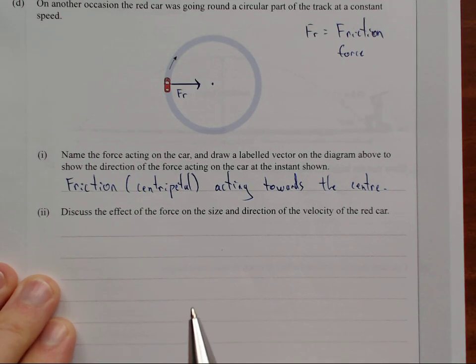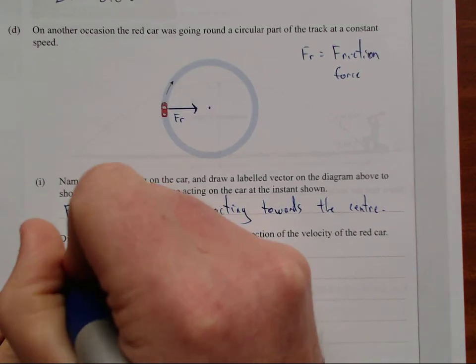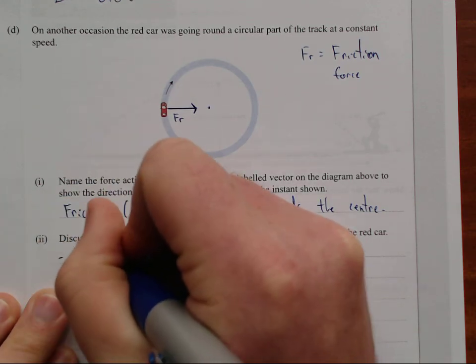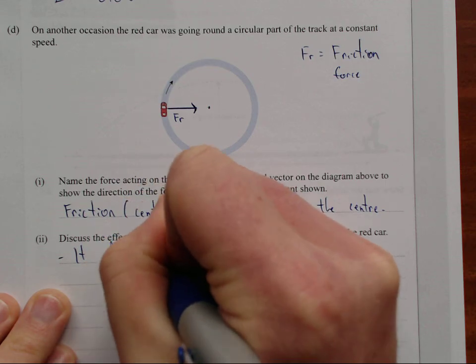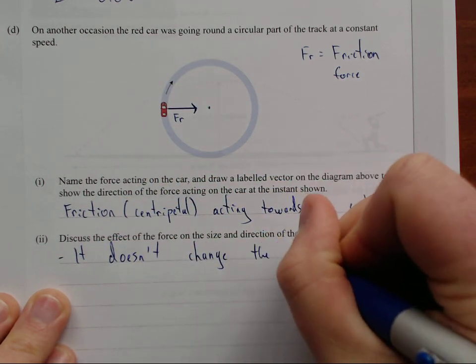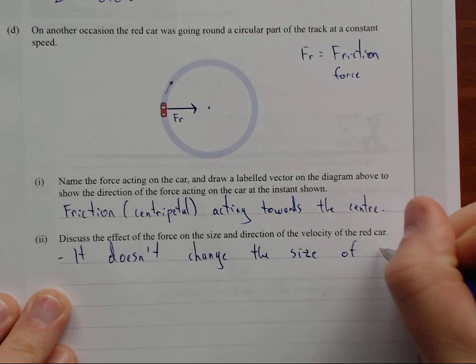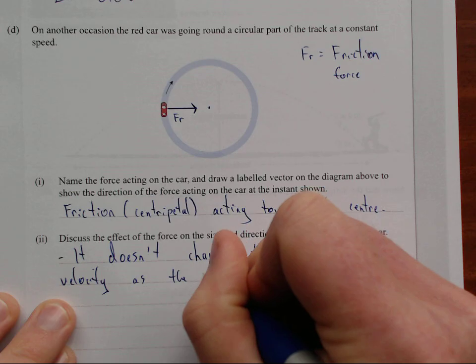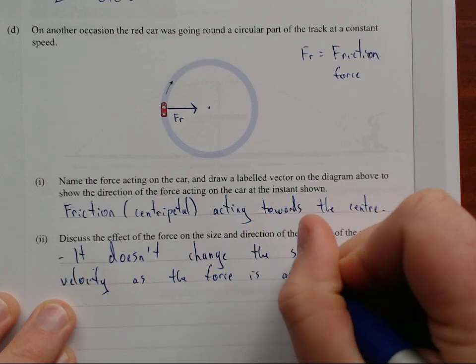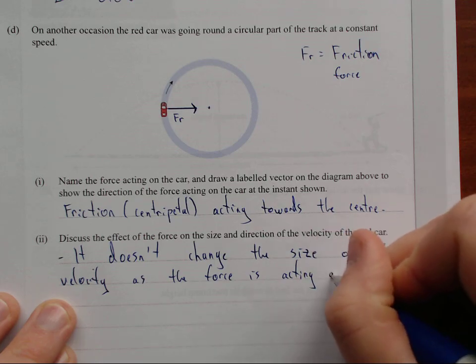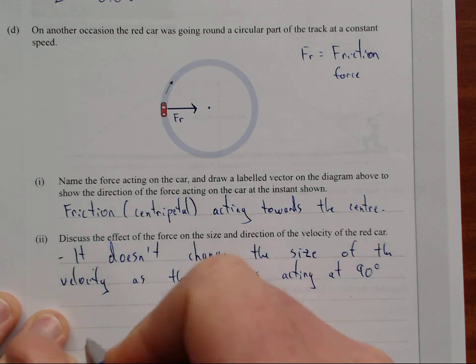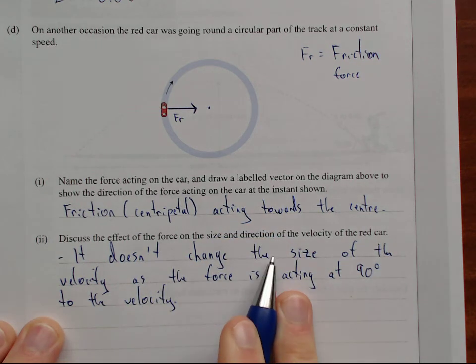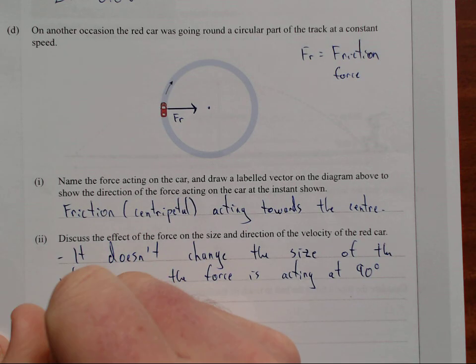Discuss the effect of the force on the size and direction of the velocity of the car. So it doesn't change the speed of the car at all, because it's acting at right angles. It doesn't change the velocity as the force is acting at 90 degrees. So that's what happens to the size, absolutely nothing.